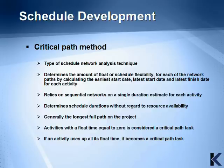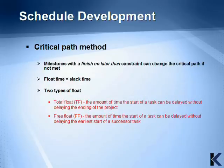If an activity uses up all of its float time, it becomes a critical path task. Milestones with a finish-no-later-than constraint can change the critical path if they are not met. Float time is the same as slack time, and there are two types of float. The first is total float, which is the amount of time the start of a task can be delayed without delaying the end of the project. And free float, which is the amount of time the start of a task can be delayed without delaying the earliest start of a successor task.